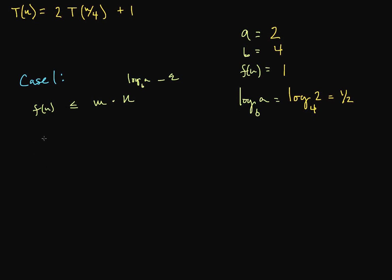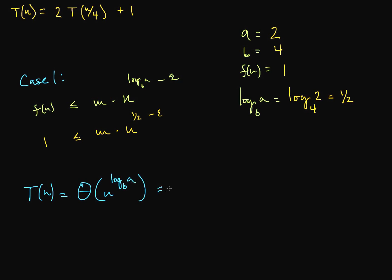Plugging in, we get 1 ≤ m · n^(1/2 − ε). We can clearly find values — say m = 2 and any positive epsilon — that make this true. So T(n) is Theta of n to the log base b of a, which is Theta of n^(1/2), or Theta of square root of n.